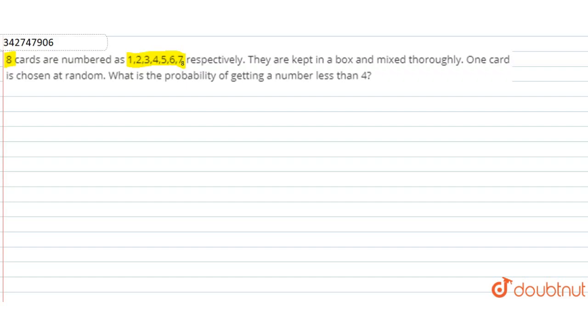What does this question mean? 8 cards are mixed in a box and after that, one card is removed. We have to find the probability of getting a number less than 4. So, we will make our sample space. What is the sample space that we have given in the question?